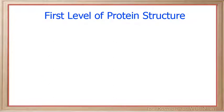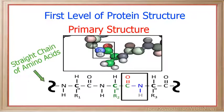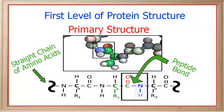The first level of protein structure is called the primary structure, and it is simply a straight chain of amino acids. The bond that holds this structure together is called a peptide bond. The peptide bond is the bond that holds one amino acid to another and is located between the nitrogen of one amino acid and the carbon of another amino acid.